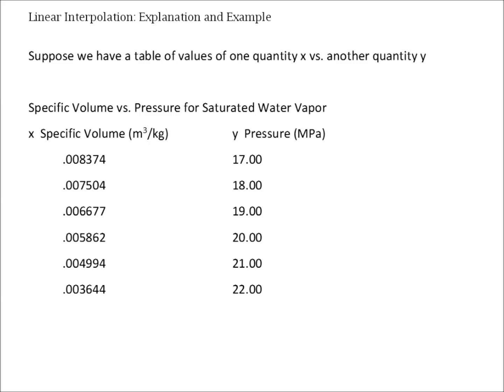Suppose we have a table of values of one quantity x versus another quantity y. For example, we might have a table of specific volume versus pressure for something like saturated water vapor. The table has a column of x values, specific volume in cubic meters per kilogram, and a column of y values, pressure in megapascals.